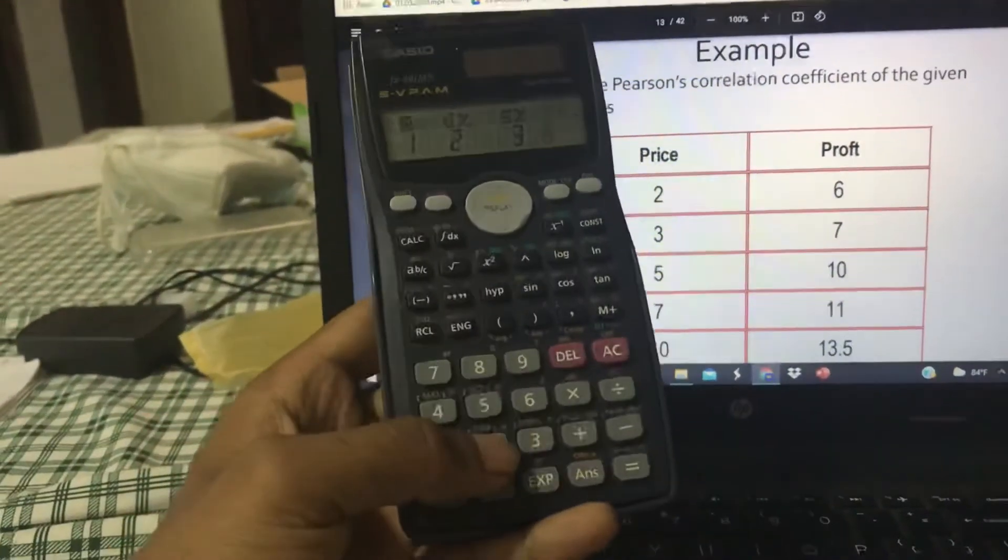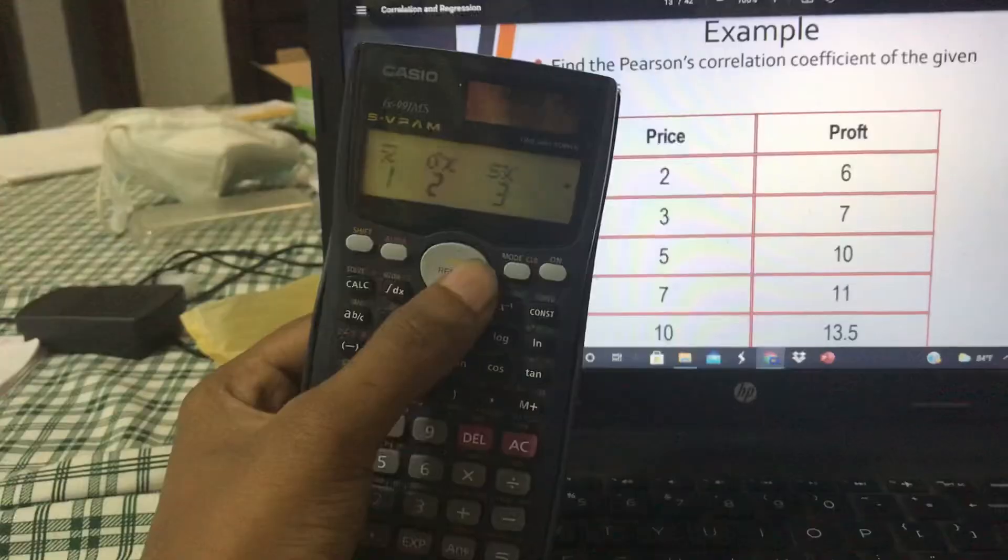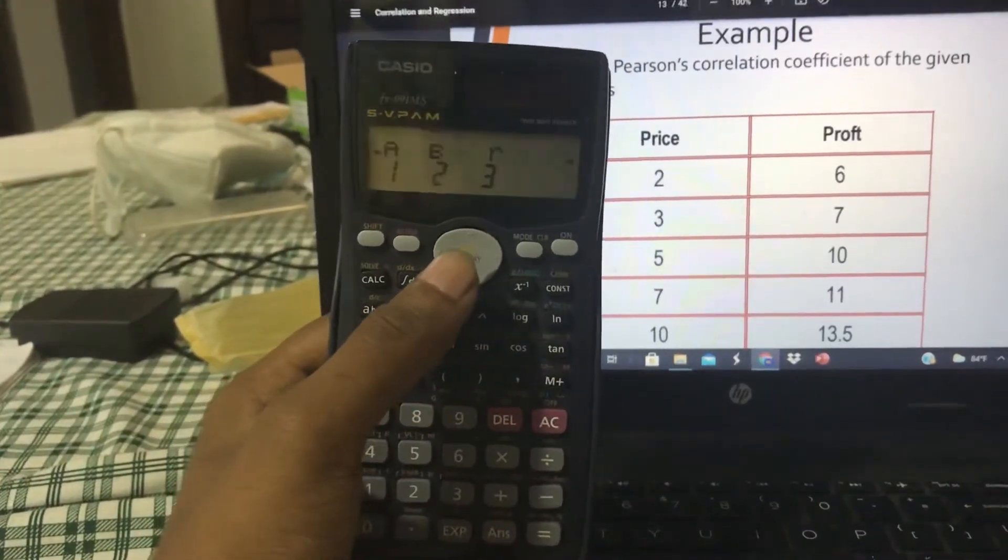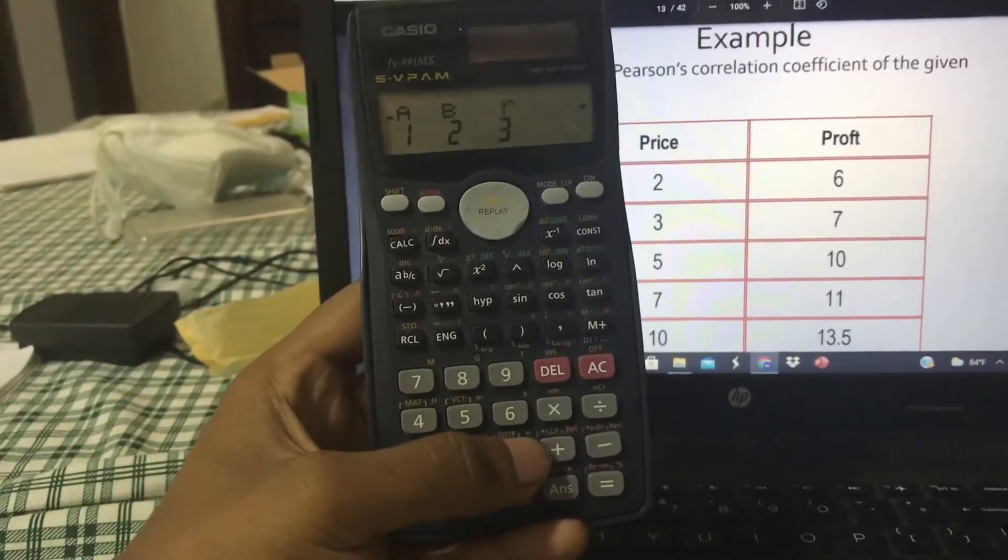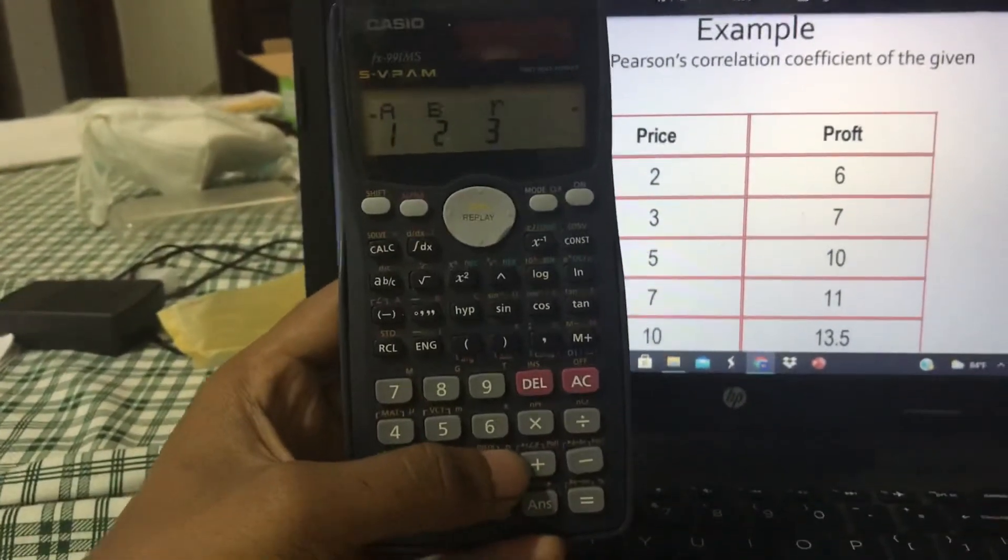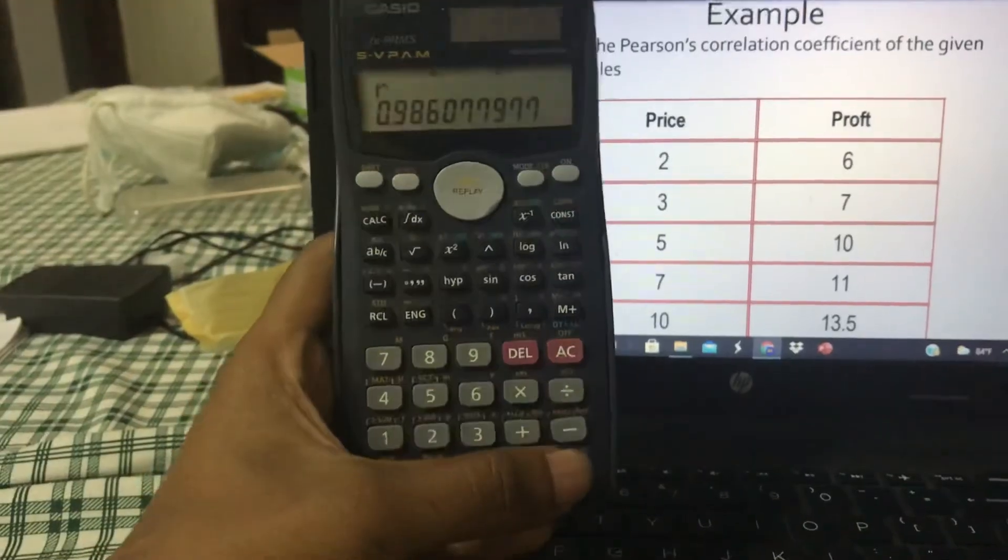Then you have to press Shift and number 2. Then you have to press this button twice, then you can see the R symbol. So here, symbol R denotes correlation coefficient. So you have to press number 3, then the equal button.